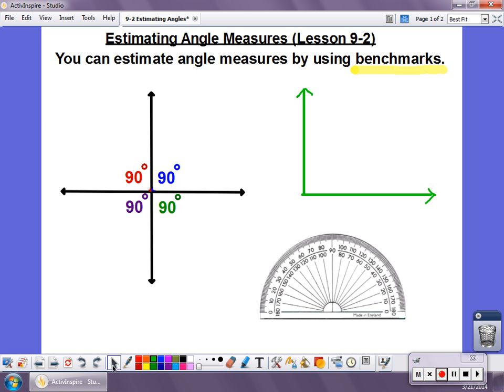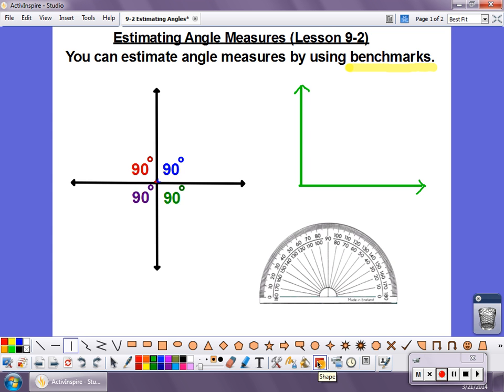For example, what if instead of having an angle that was exactly 90 degrees, what if my ray was here? That's very close to 90 degrees, so I might make an estimate of like 85 degrees or even 80 degrees.